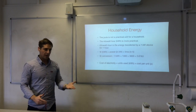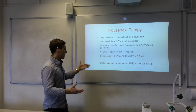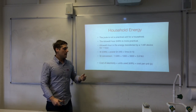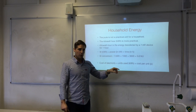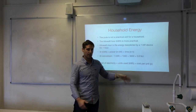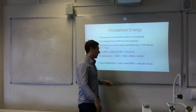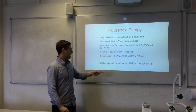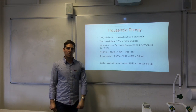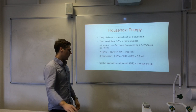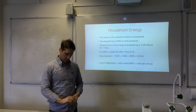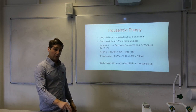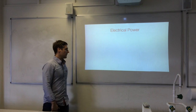To calculate the cost of electricity, you take the number of units used — the number of kilowatt hours — and multiply by the cost per unit, which is usually given in pence. That gives you how much it cost to run a device for a given time. So we're using kilowatt hours as the more practical unit for household energy.